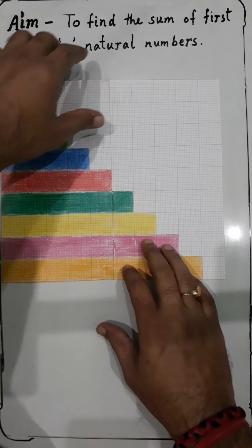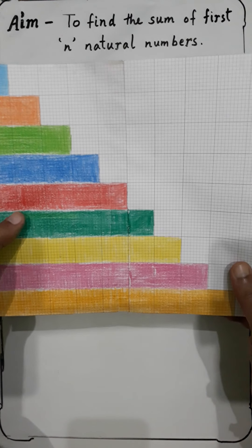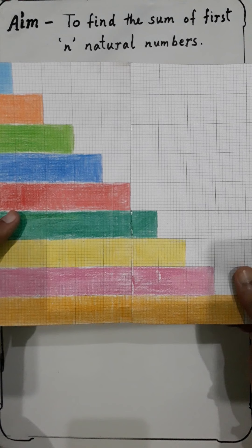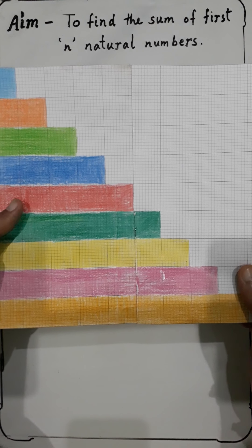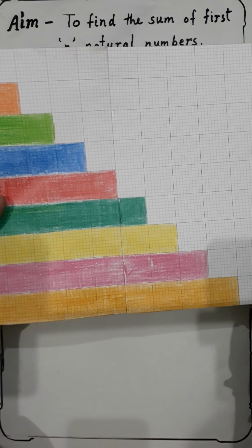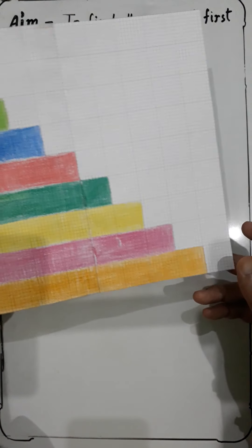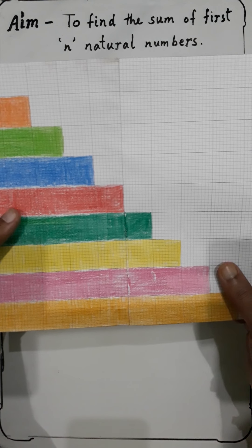Now let us see the things required for this activity. You need graph paper, as you can see here. You require colors, and you require adhesive, that is glue.